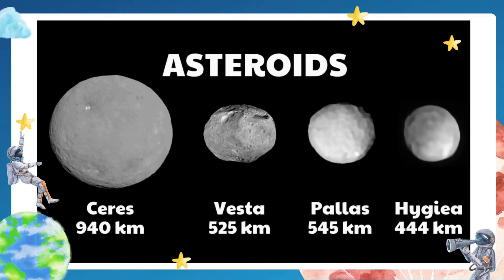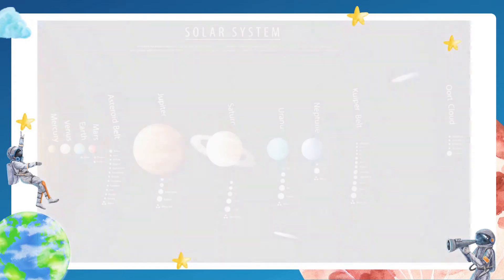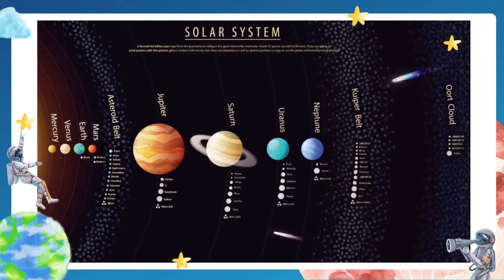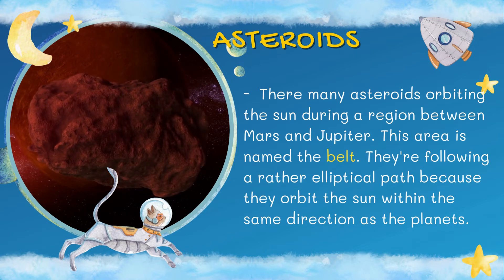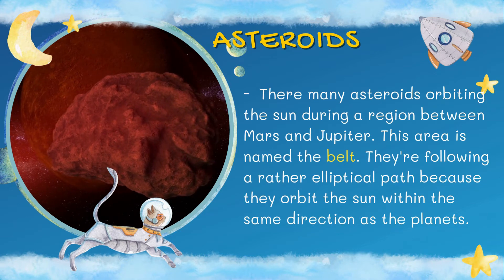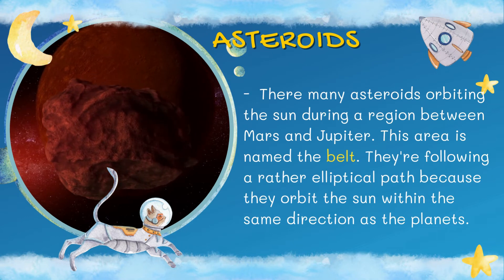Ceres is the largest of the asteroids, about 930 kilometers in diameter. Like every other big rock, they can be potato-shaped, papaya-shaped, or have strange shapes. There are many asteroids orbiting the sun in a region between Mars and Jupiter — this area is named the asteroid belt. They follow a rather elliptical path as they orbit the sun in the same direction as the planets. A larger object like a planet can pull an asteroid out of orbit, and once captured by a planet's gravitational pull, it can become a satellite of that planet. Many astronomers believe that the two satellites of Mars, Phobos and Deimos, are captured asteroids.